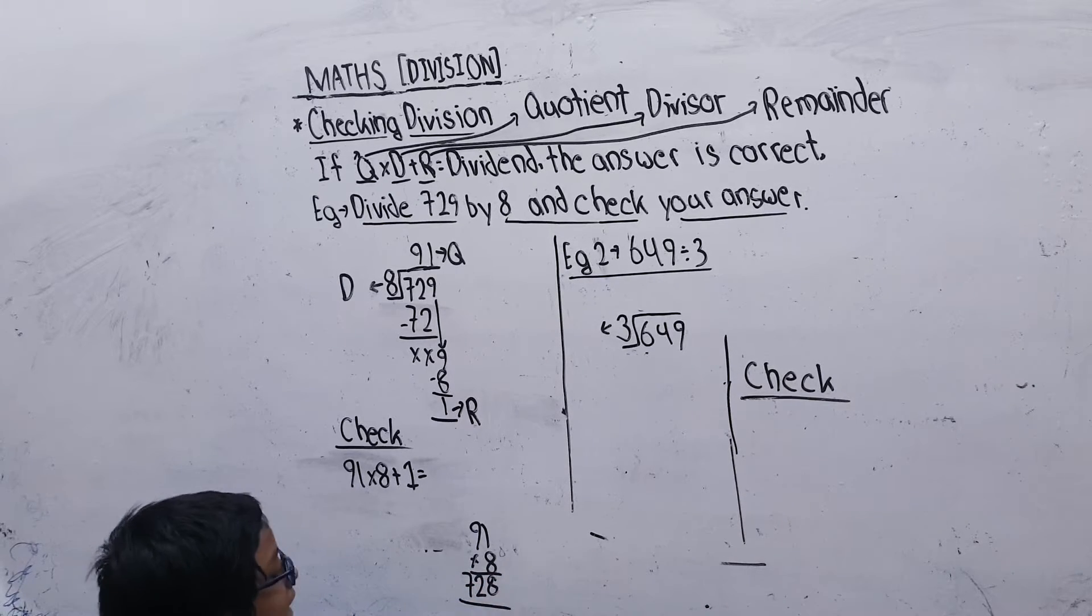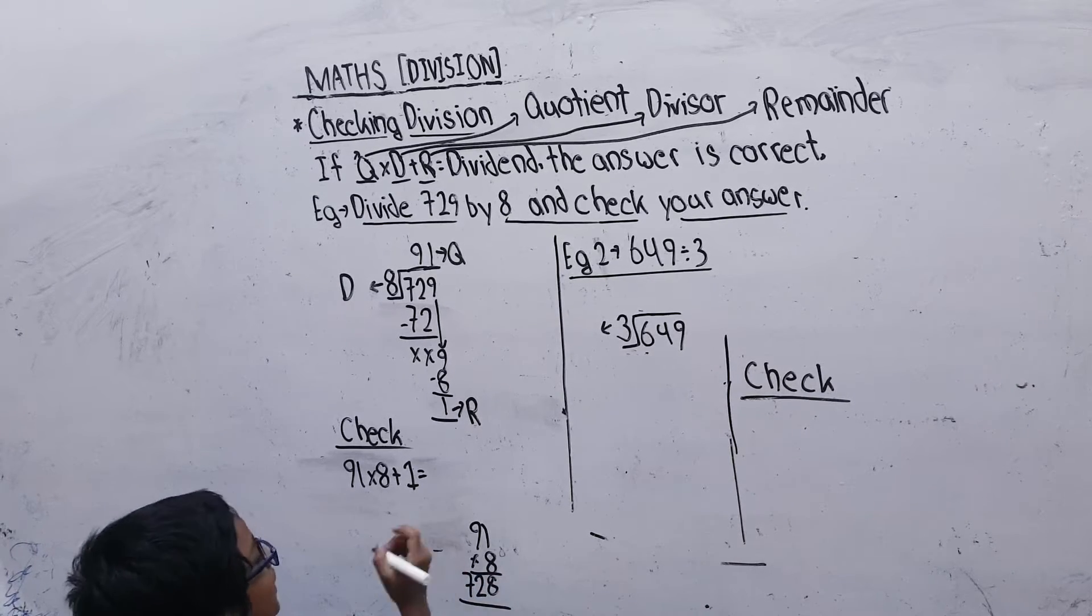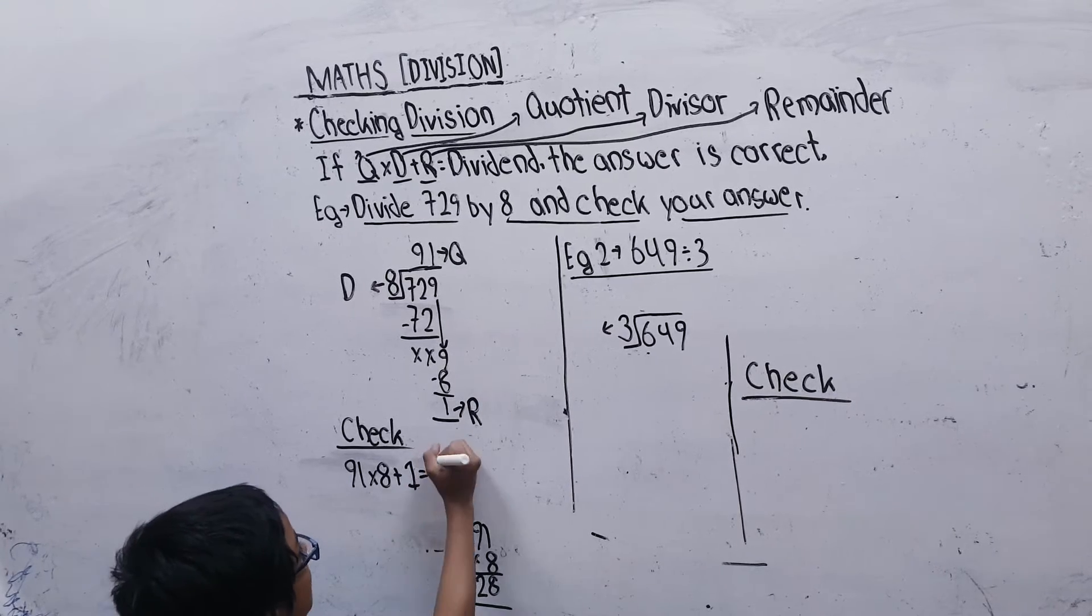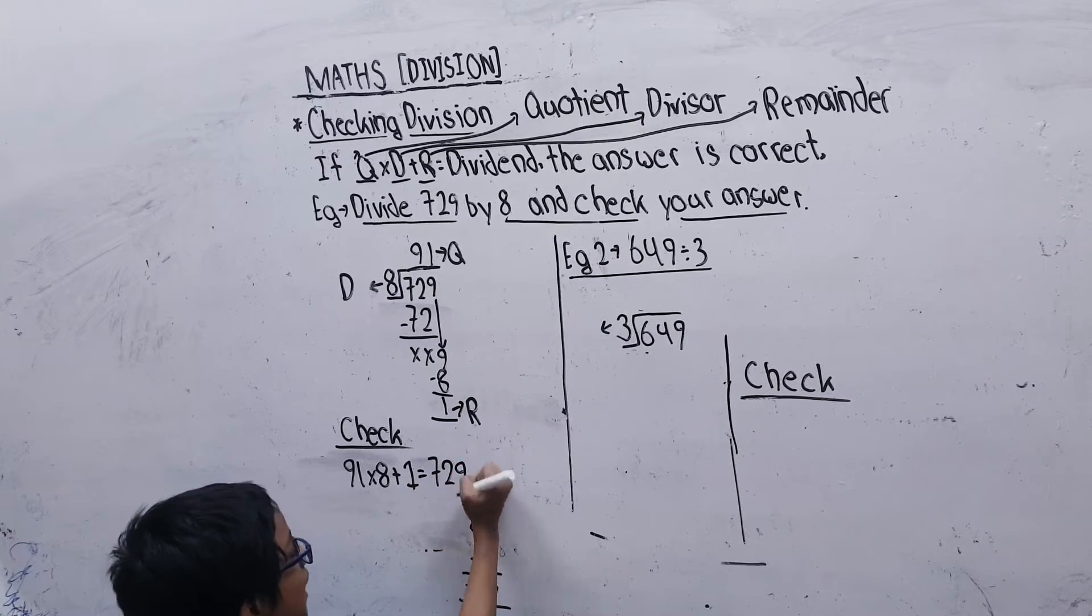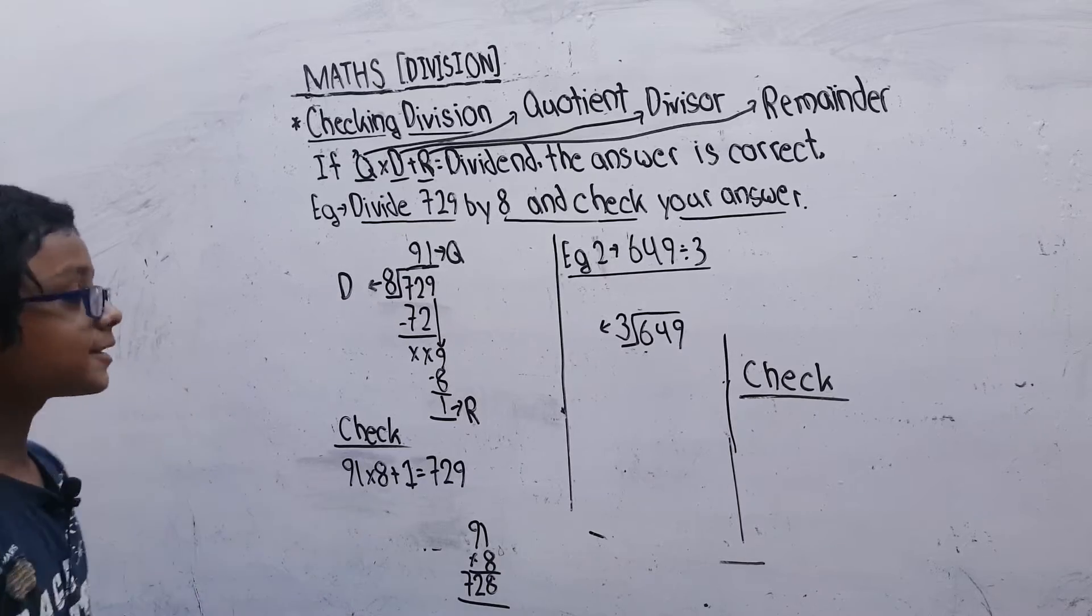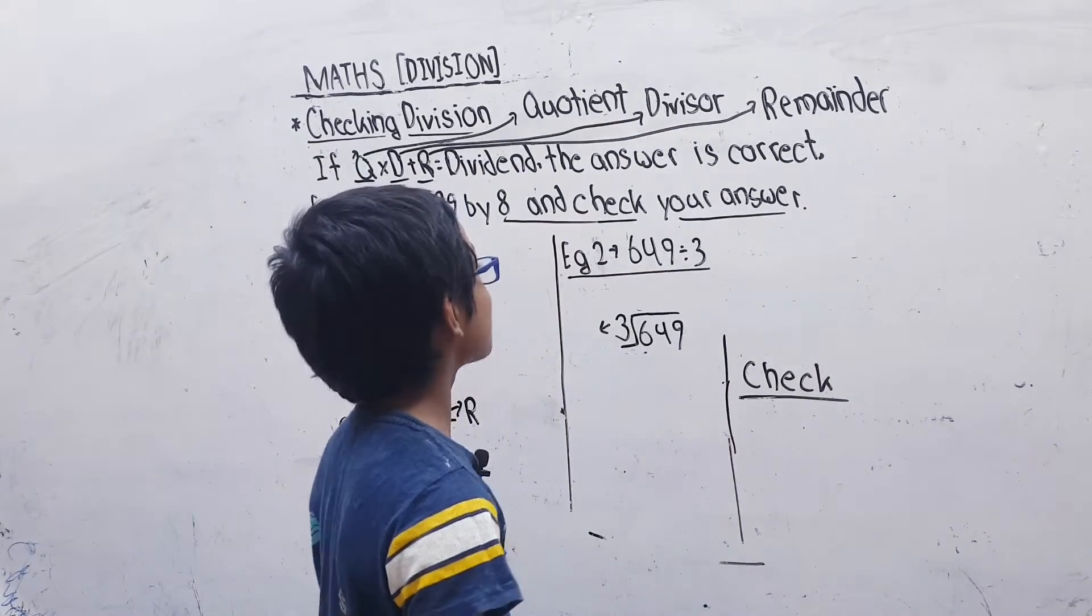If we add 1 to it, it will be 729, so the answer is correct. Let's see one more example: 649 divided by 3.